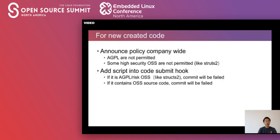For new created code, we apply the policy company-wide. Any AGPL OSS codes are not permitted to check in. Some high-risk OSS codes are not permitted either. We also embed scanning into the code submit hook. If the patch is AGPL-related or involves risky OSS, the commit will fail. If the patch contains OSS source code, the commit will fail too. In this way, we can make sure that no new OSS code will be entered into the code repository illegally.